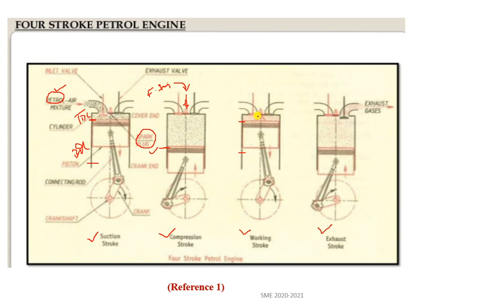After self-ignition, both valves remain closed and the combustion gases force the piston downward from TDC to BDC — this is the power or working stroke. In the exhaust stroke, the piston moves from BDC to TDC and the exhaust gases leave through the exhaust port to the atmosphere.